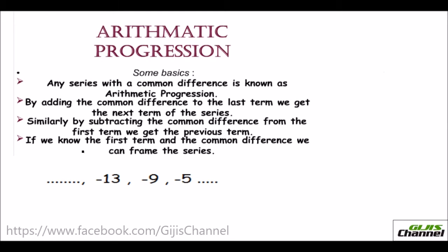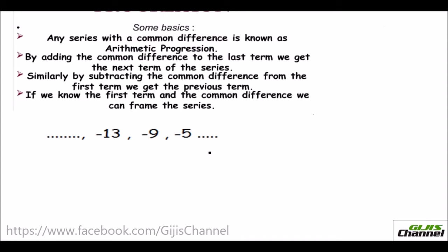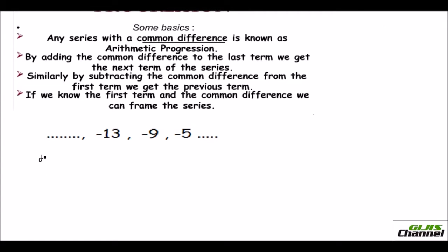I'll give you an example of how to find the last term and the first term of a given arithmetic series. First, let me confirm that this series is an arithmetic series. There should be a common difference between the terms. So let me check if the difference is common. To find D, the common difference, all you need to do is take two terms and subtract the first term from the second term. So I take the first two terms here.